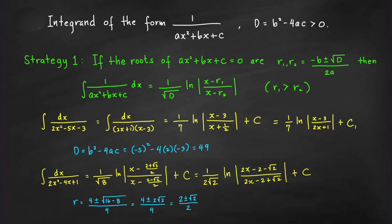Now consider integrals where the integrand is of the form 1 over ax² + bx + c, with a ≠ 0 and the discriminant D positive. The strategy is to use the integration formula: (1/√D) · ln|( x − r₁) / (x − r₂)| + C, where the roots are r = (−b ± √D) / (2a) and r₁ > r₂.